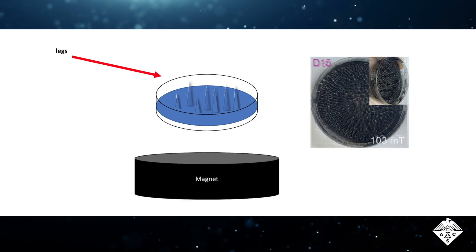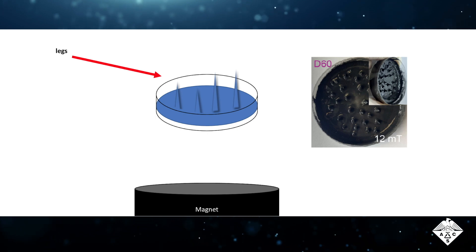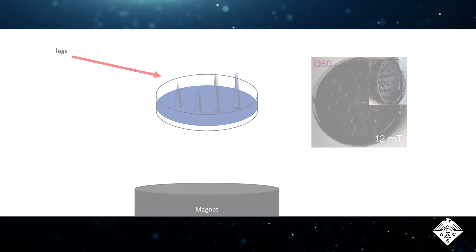Placing the magnet farther away from the gelatin resulted in fewer, but longer legs, allowing the researchers to fine-tune the millirobot's structure.